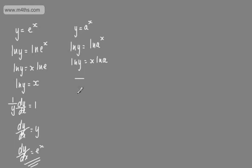I'm going to differentiate both sides now with respect to x. Differentiating the natural log of y, we get 1 over y times dy by dx using implicit differentiation. Now let's consider differentiating x multiplied by the natural log of a. The natural log of a is just a constant. So if I'm differentiating x multiplied by the natural log of a with respect to x, I'm just going to get the natural log of a — just as differentiating 2x gives 2, or 10x gives 10. This just leaves us with the constant, the natural log of a.